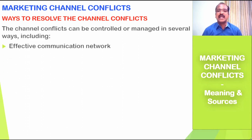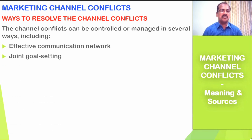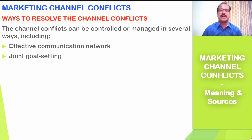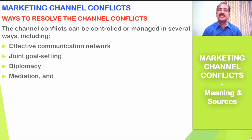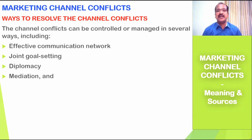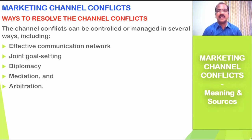How to resolve these conflicts? Channel conflicts can be controlled or managed in several ways, including: an effective communication network between channel intermediaries and the company; joint goal setting, where the company organizes meetings with all channel intermediaries to clearly define territories and roles at every level; diplomacy, through which marketers can resolve conflicts among intermediaries; mediation by a third party capable of resolving the conflict; and arbitration, which is another way of resolving channel conflict between channel members.